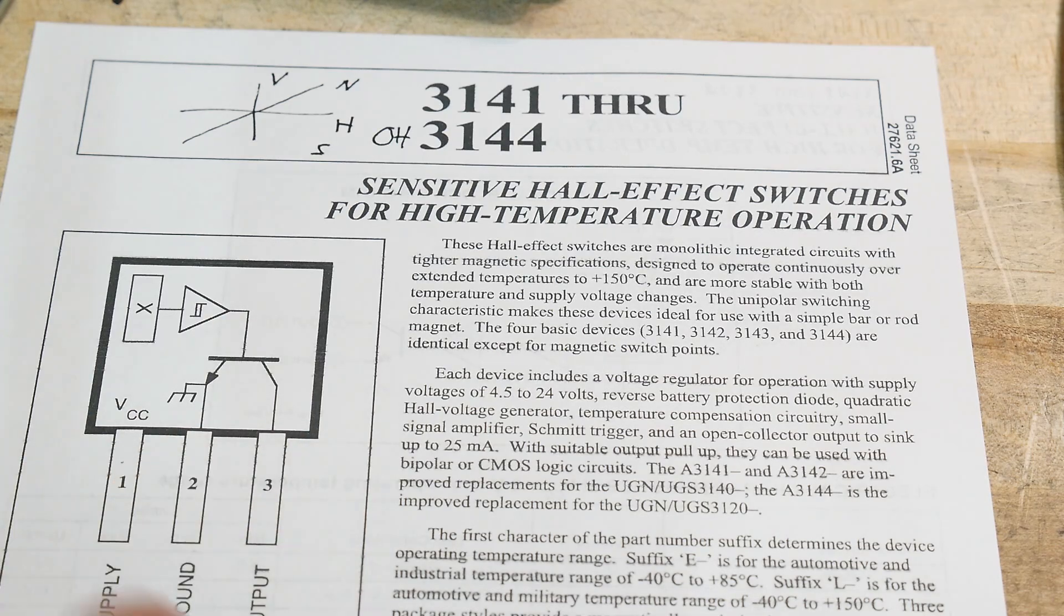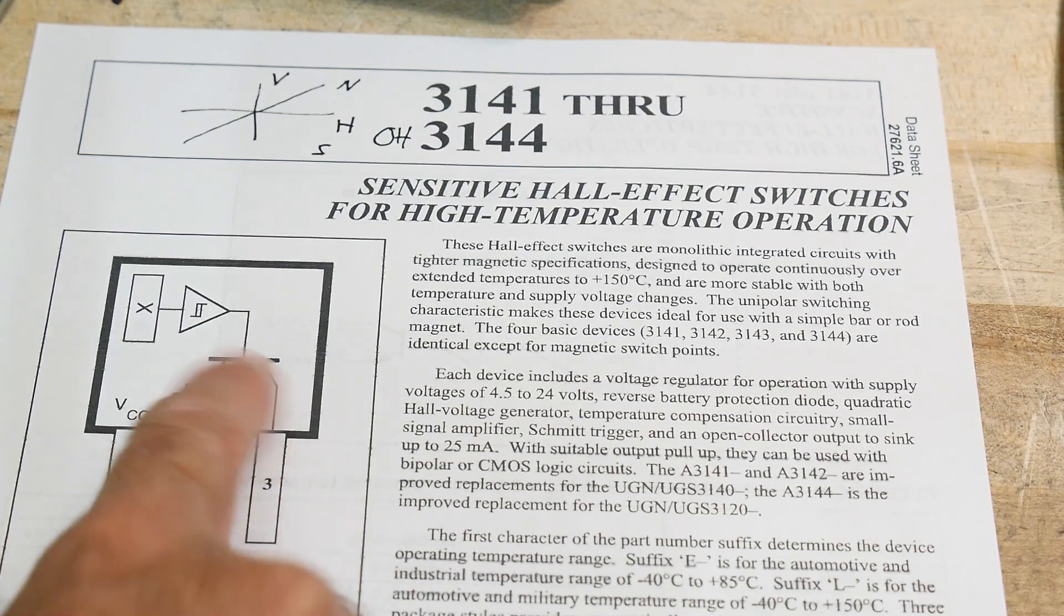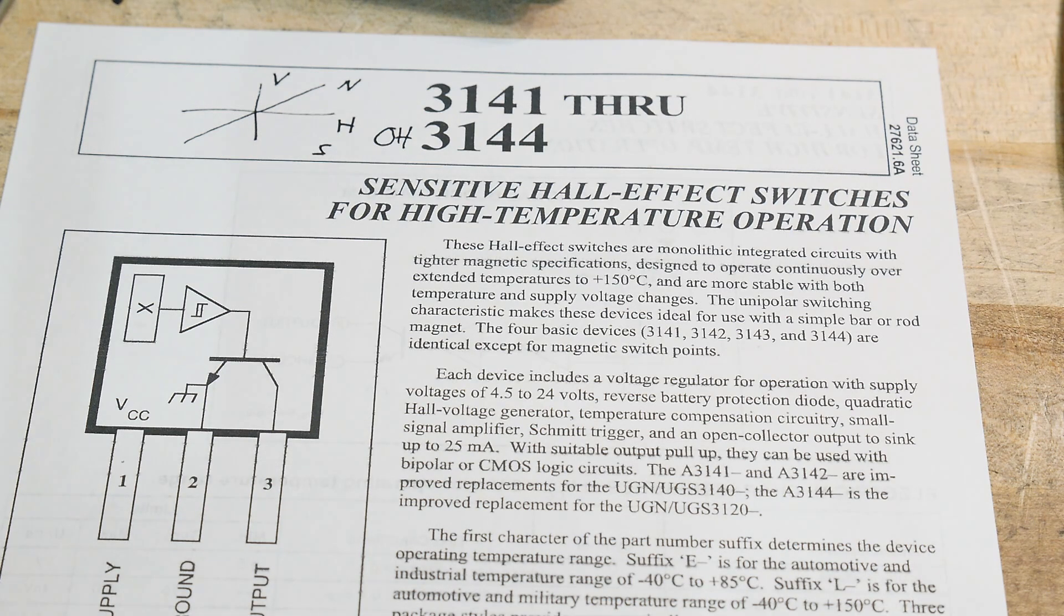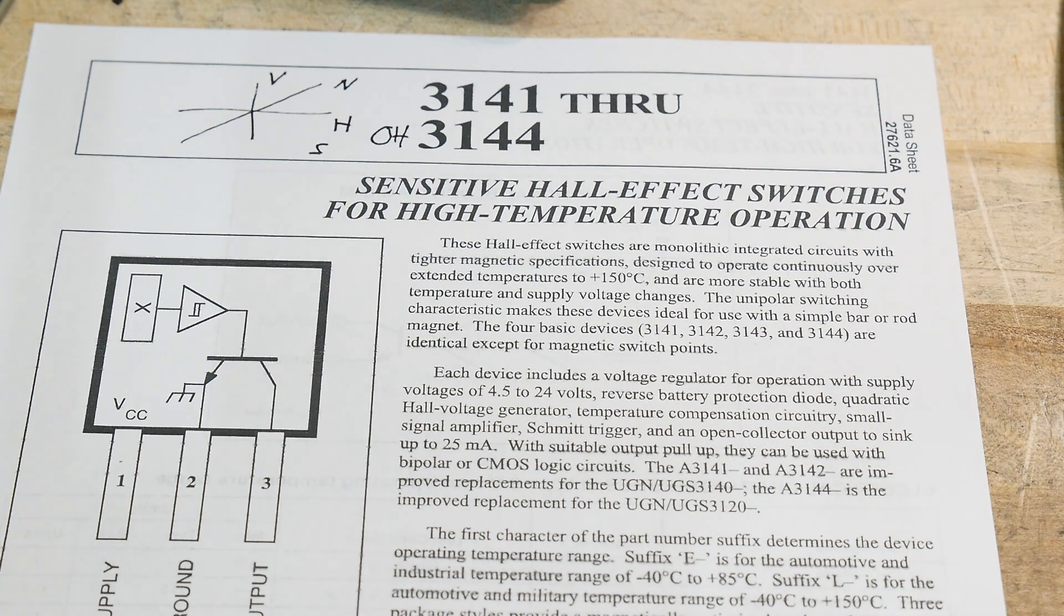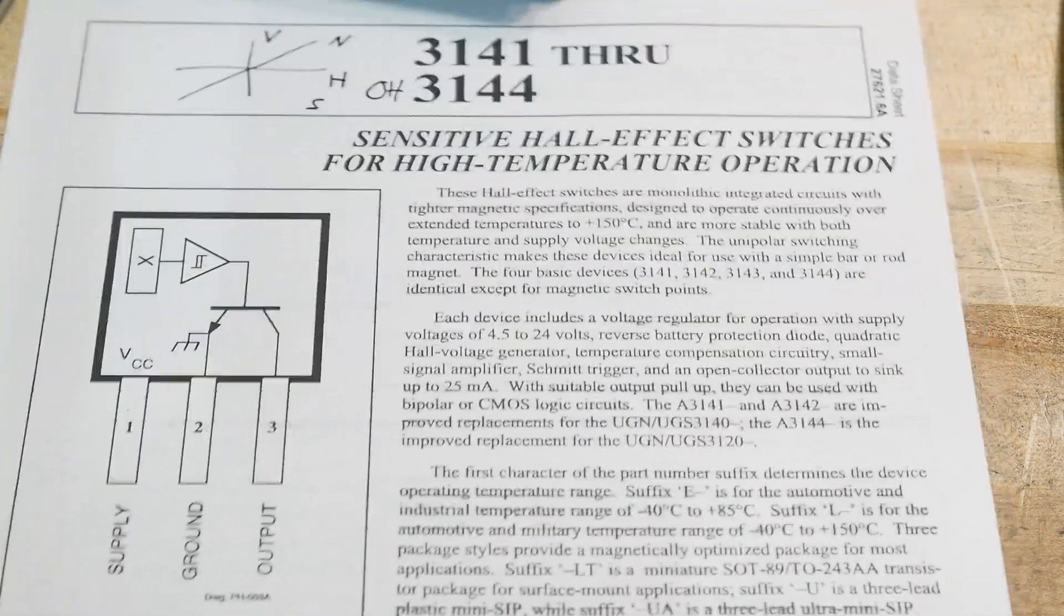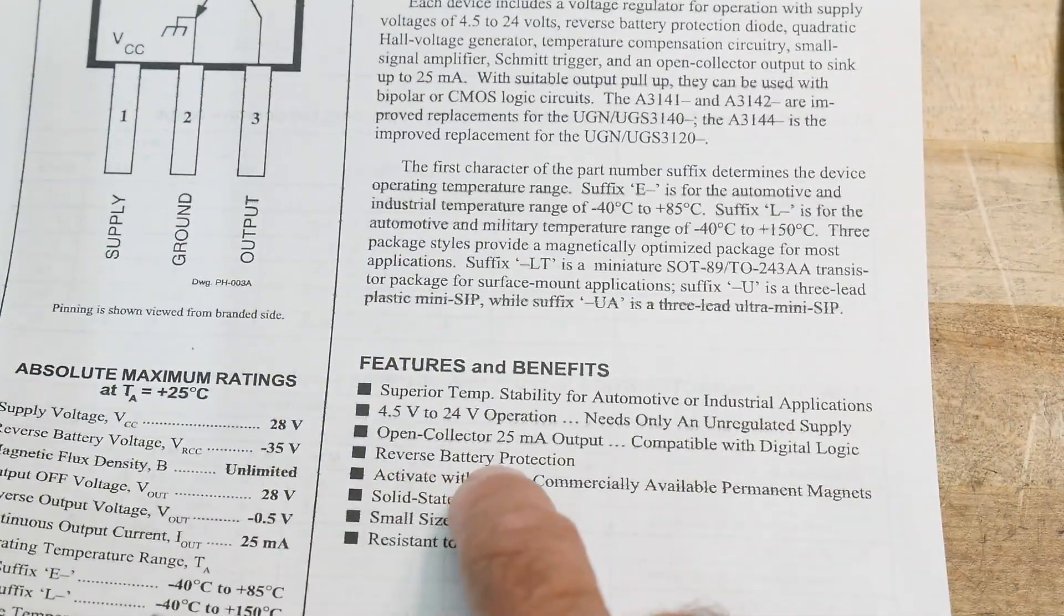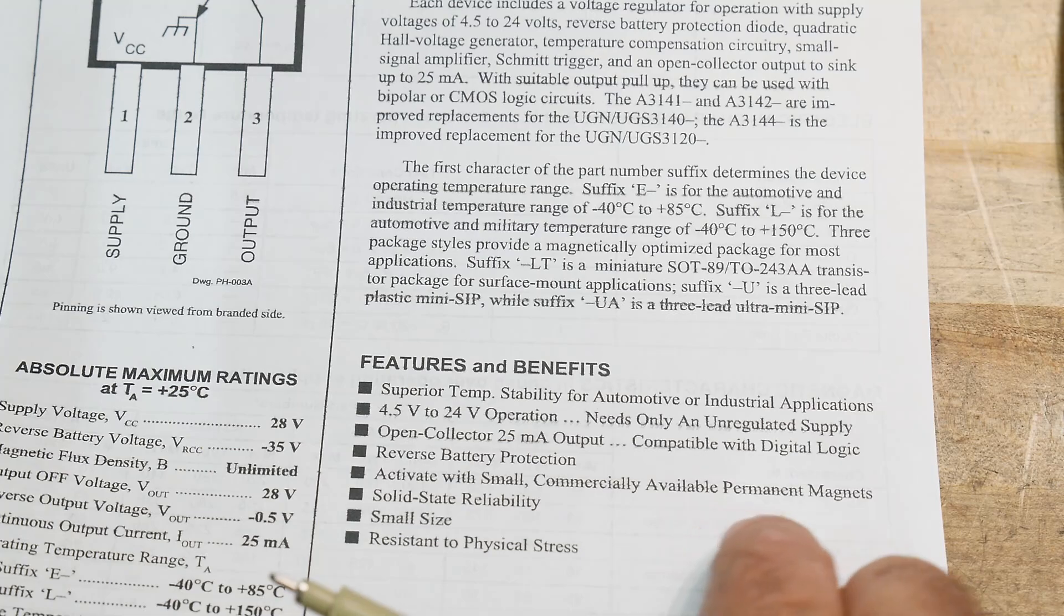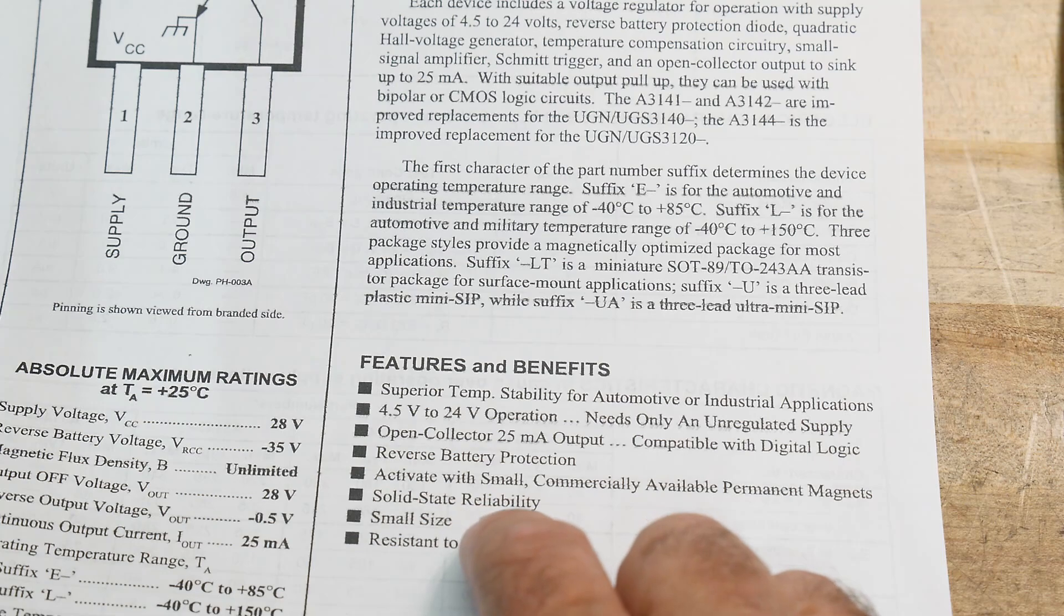You put a VCC here, ground here, and then your output is an open collector output. And these things operate from four and a half to 24 volts, so that's pretty cool. And it's open collector, which is a 25 milliamp output, so no more than 25 milliamps. What can we use it for? Reverse battery protection, that's interesting. Activate with small commercially available permanent magnets. That's what we'll be doing here.